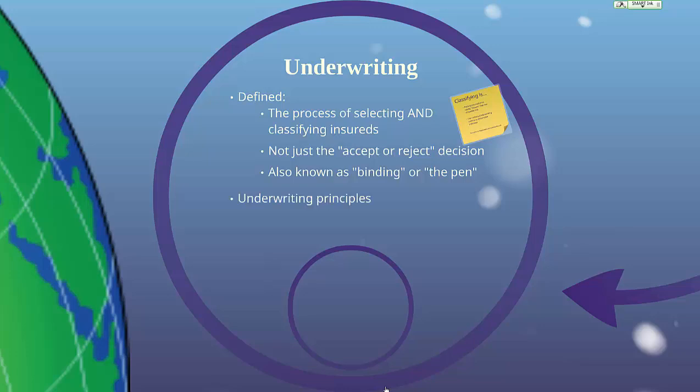Now let's talk about some underwriting principles. First, every underwriter, whether an agent or a company underwriter, should follow the company guidelines. Every company has their own appetite for risk, so different companies' underwriting guidelines are going to be different. Some companies might be targeting a slightly higher risk group, whereas other companies are less likely to attract higher risks.